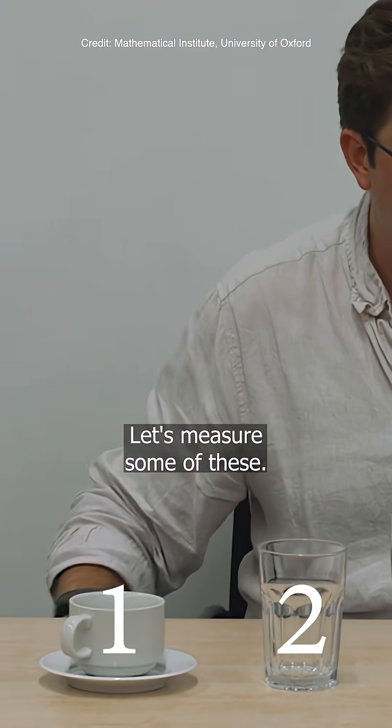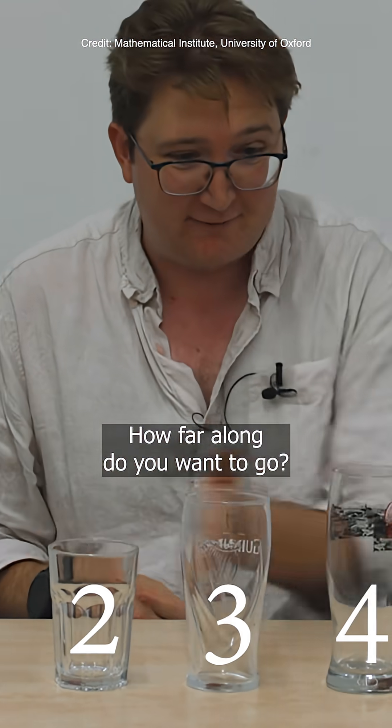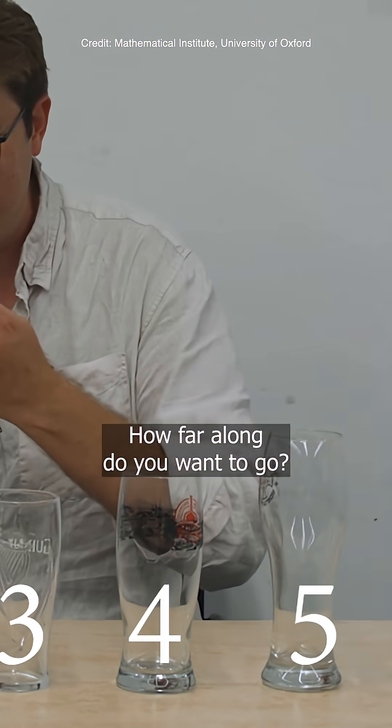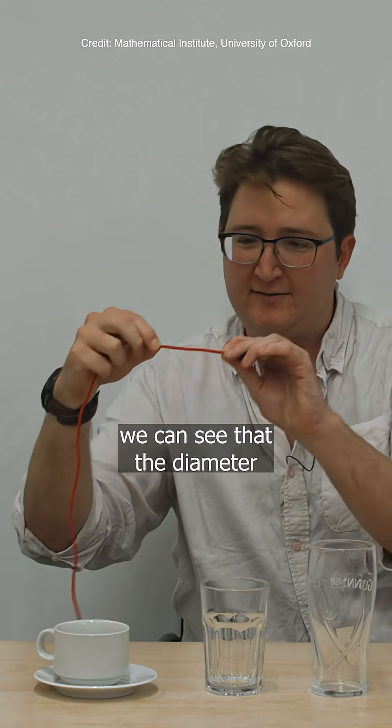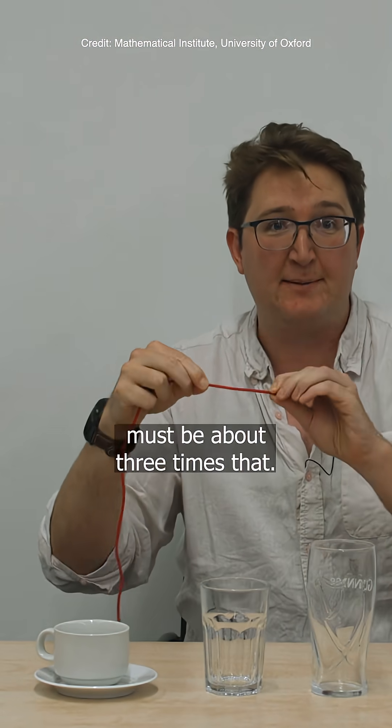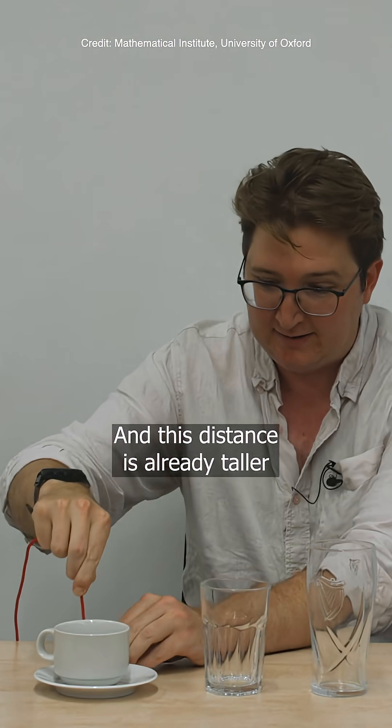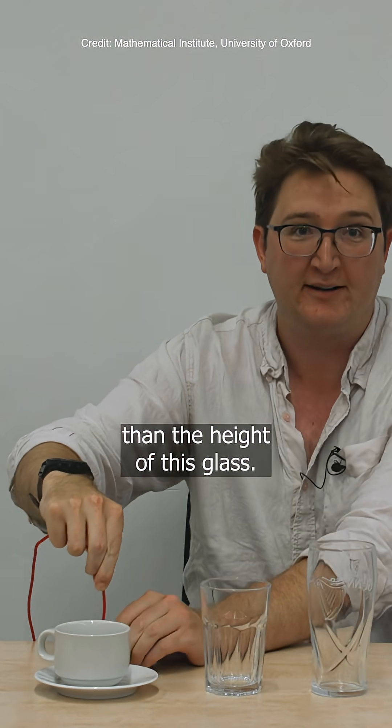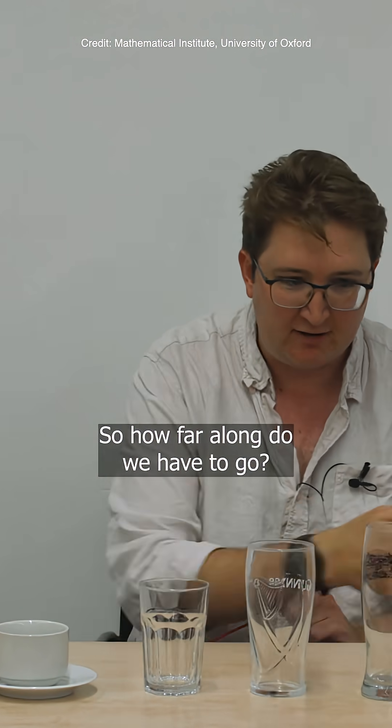Let's measure some of these. Place your bets first. How far along do you want to go? Well, if we start from this end, we can see that the diameter of this cup is here. So the circumference must be about three times that. And this distance is already taller than the height of this glass. So how far along do we have to go?